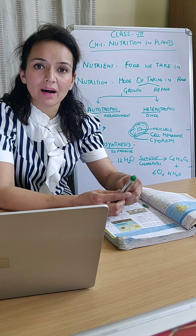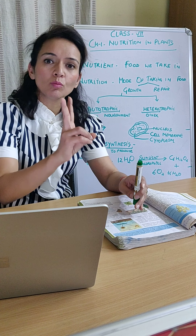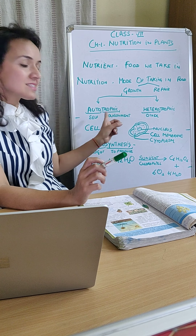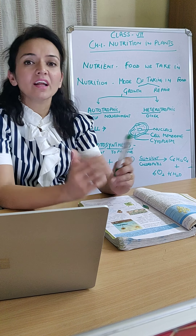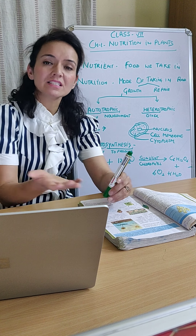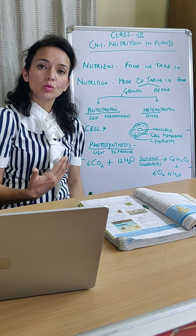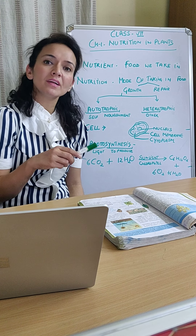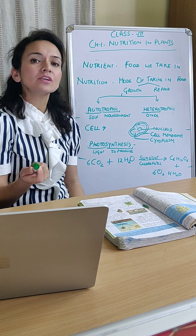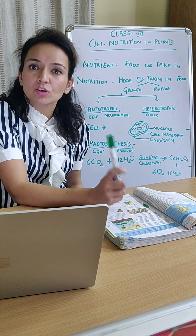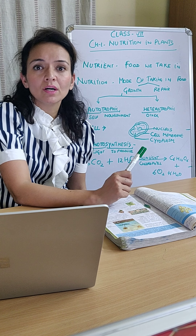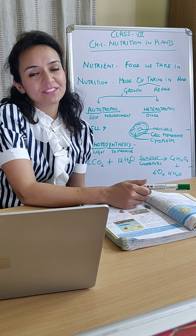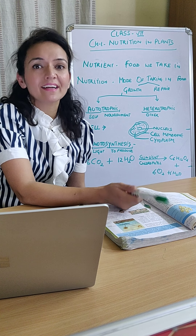Since we are talking about nutrition in plants, you must know there are two modes of nutrition. Number 1 is autotrophic nutrition - 'auto' means self and 'trophic' means nourishment - that is, plants make their own food. Second is heterotrophic nutrition - 'hetero' means other and 'trophic' means nourishment - that is, taking food from other organisms. You will be surprised to know that plants not only undergo autotrophic nutrition but also undergo heterotrophic nutrition, which is what is taught in class 7.